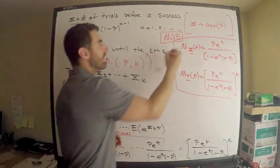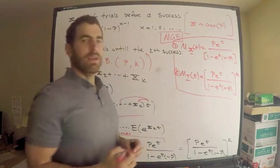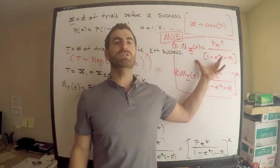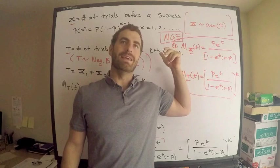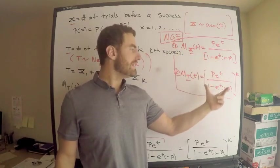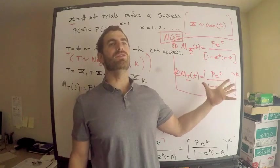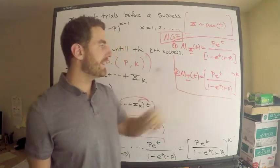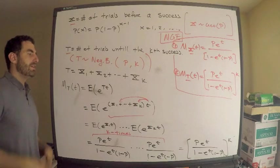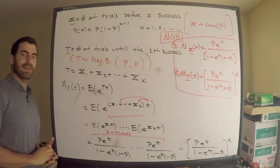I hope that from now on you'll see that if you can remember the MGF for the geometric random variable, that immediately gives you an indication of what the MGF for the negative binomial distribution is. Thank you for watching — tell me what you think, and please like the video.